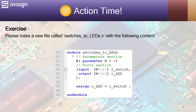At line 25 we declare the module name. Then we have a parameter which has a default value of 4. Next we declare the input and the output. Next at line 33 we use a continuous assignment to connect the output with the input of the module. This is it.